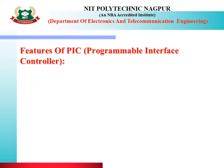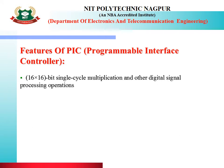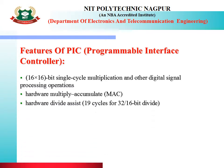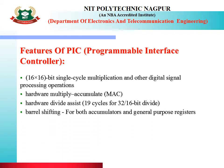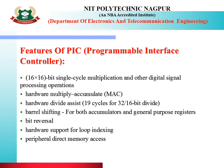Let's start with another controller, that is the PIC, which is called the Programmable Interface Controller. The features of this PIC include a 16x16-bit single cycle multiplication and other digital signal processing operations. It is having hardware multiply-accumulate, i.e., MAC. This hardware device assists 19 cycles for a 32-to-16-bit divide. It is having barrel shifting for both accumulators and general purpose registers, bit reversal, and hardware support for loop indexing. It also consists of peripheral direct access.